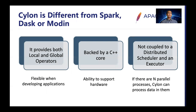Now let's look at why Cylon is different from other data frame abstractions. First, it provides both local and global operations. This allows you to work at a micro level and macro level in a larger scale environment. For example, if you want to load a large amount of data into hundreds of processes and apply a single operation to all of this data, you can do that using a distributed operation. If you want to do something that is only relevant to data in a single process, you can do that too with local operations. This is a very flexible model when developing large-scale complex applications. It is backed by C++ code and we are planning to expand it to different hardware.